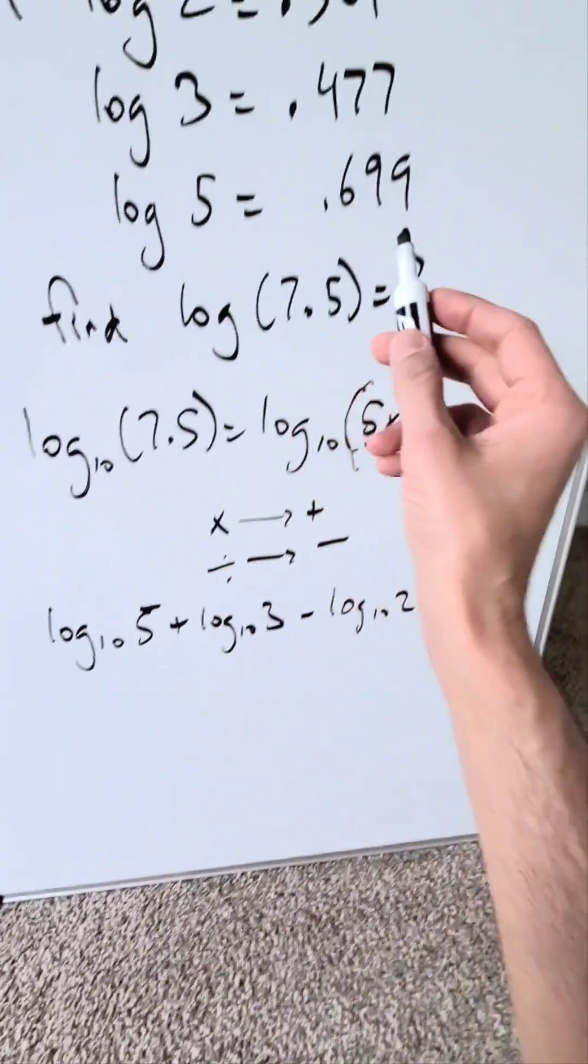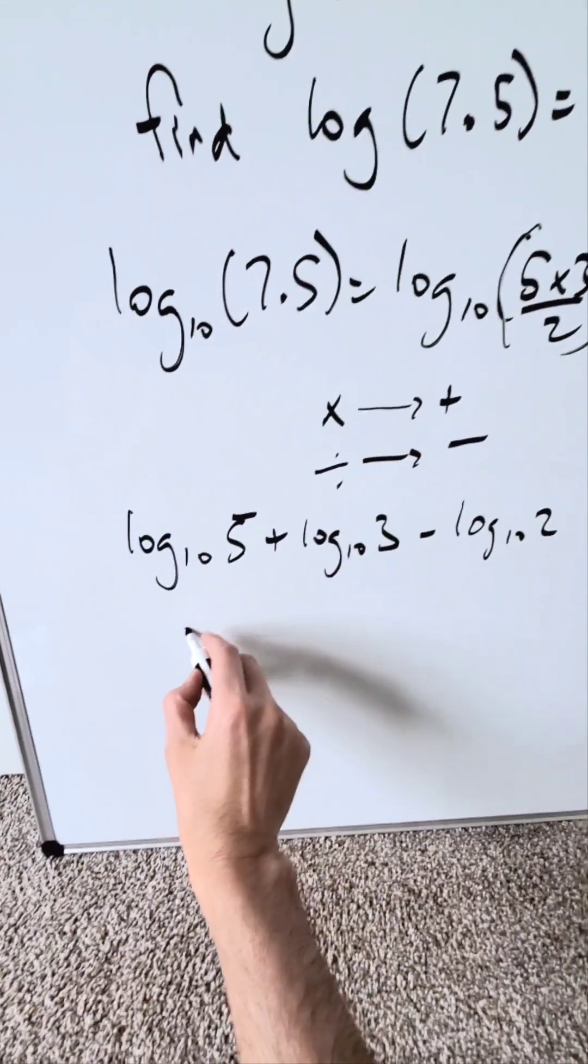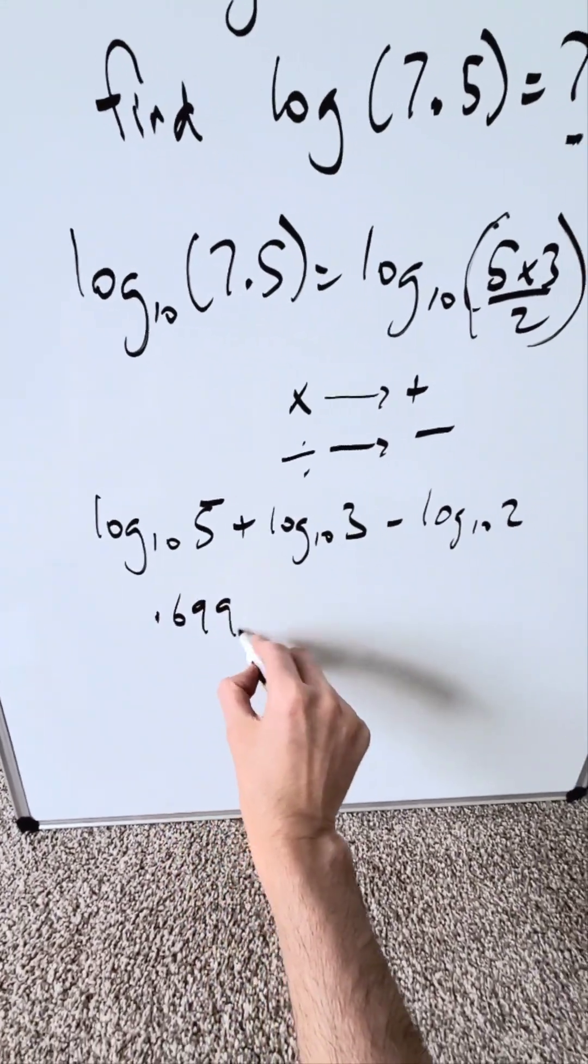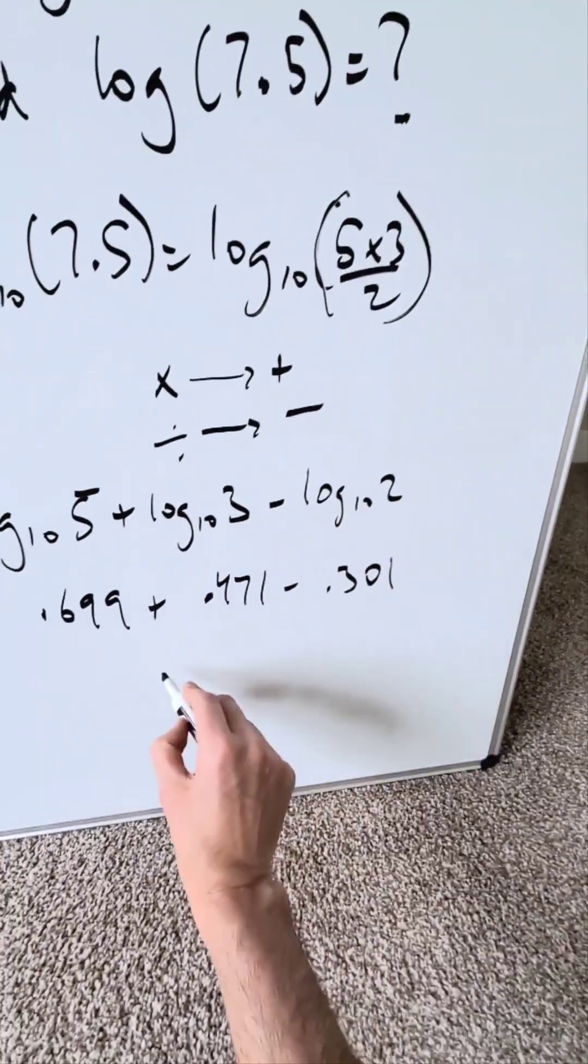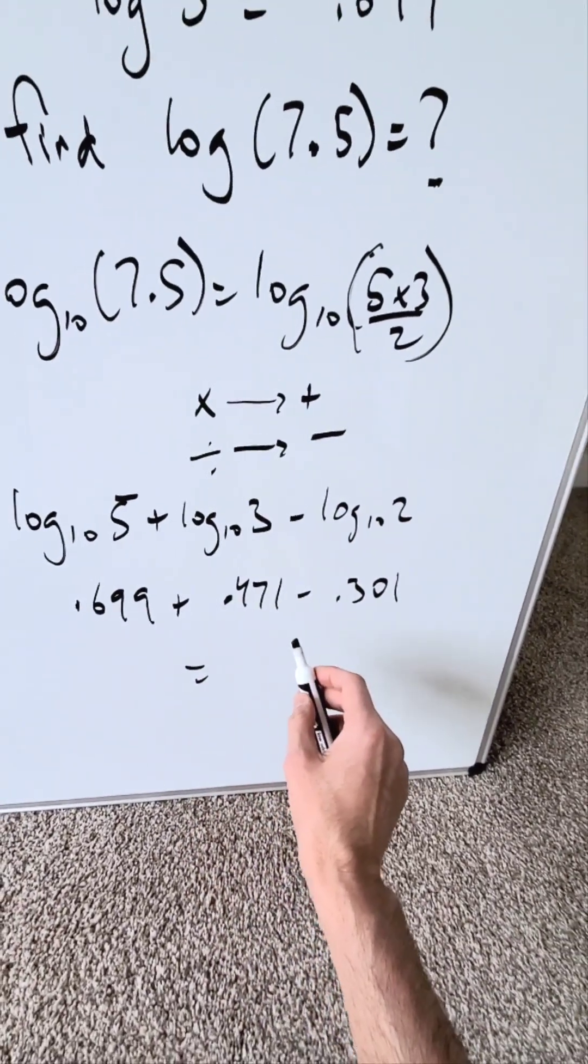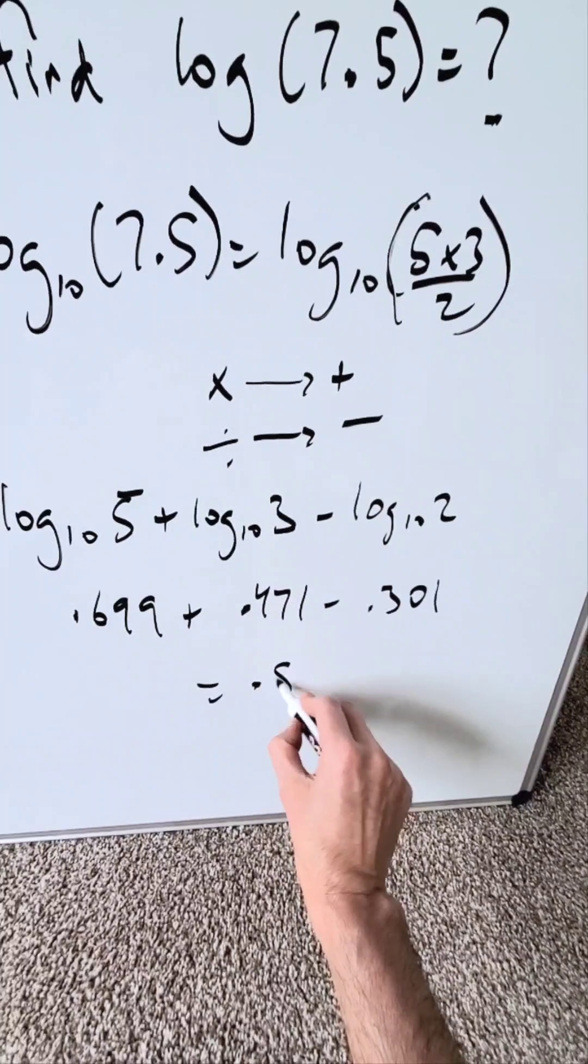You'll be bringing in these values as you have seen. You'll do 0.699 plus 0.471 minus 0.301. When you tabulate all of this, your result will be 0.875.